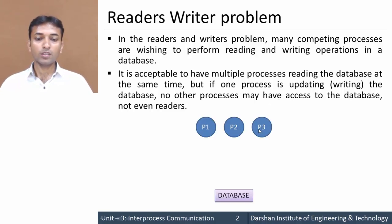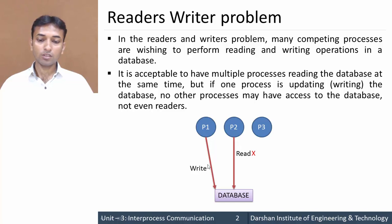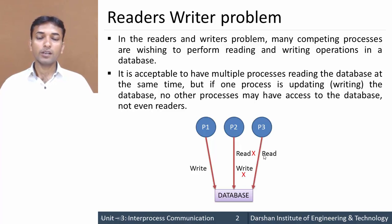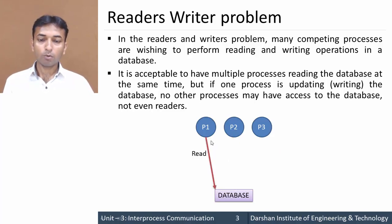Let us take an example. Suppose we have three processes P1, P2, P3 and all three are accessing the same database. If P1 is performing a write operation on this database, and P2 wants to read — it will not be allowed. If P2 wants to write — not allowed. If P3 wants to read or write — also not allowed. So if P1 is performing a write operation, the other two processes cannot access the database at all.